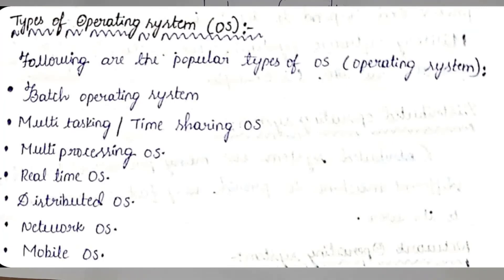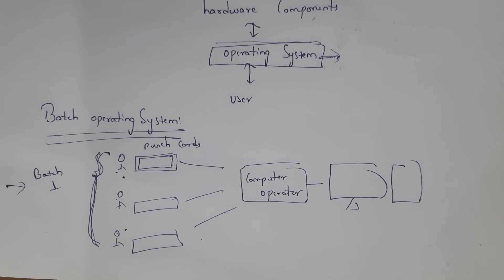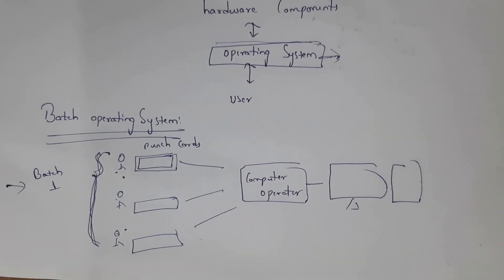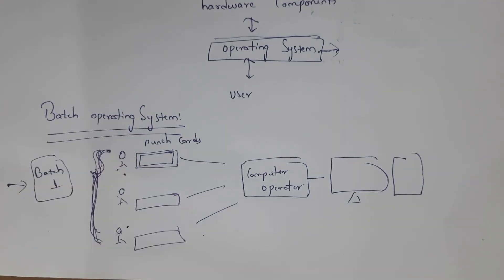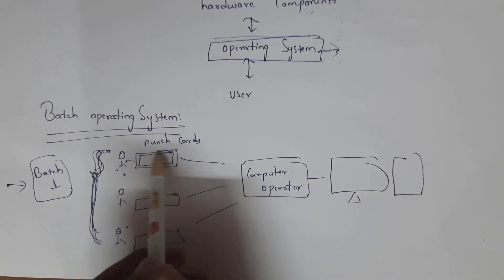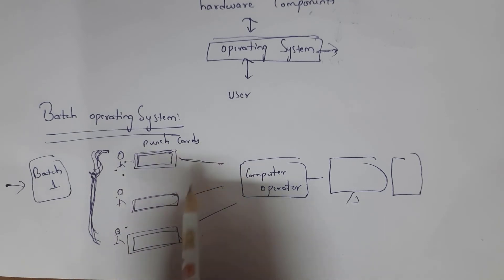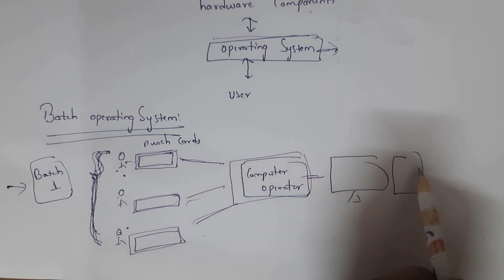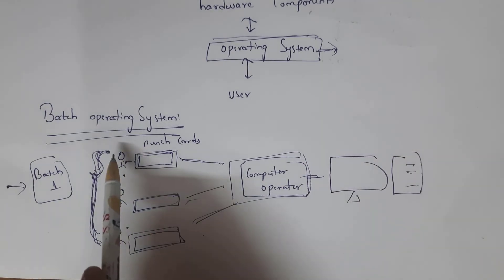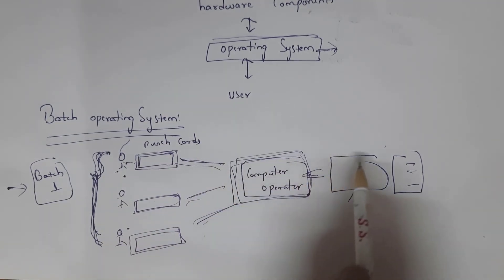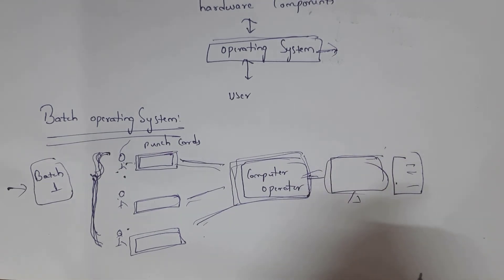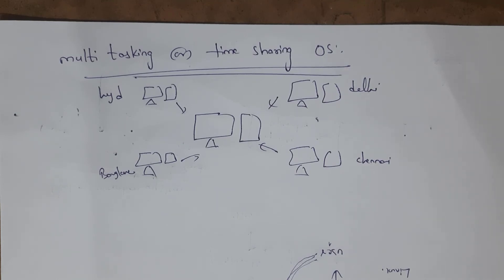There are various types of operating systems. The first is batch operating system — 'batch' means a group. Users who perform similar types of jobs are grouped into one batch. In olden days, users would write programs on punch cards and submit them to a computer operator. The operator would then insert the punch cards into the system. In a batch operating system, users cannot directly interact with the computer — they simply submit punch cards to the operator.